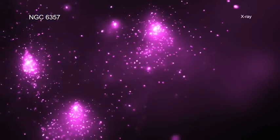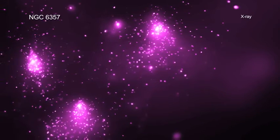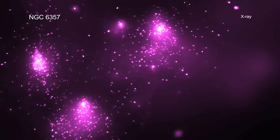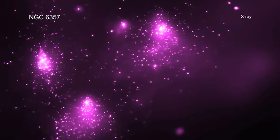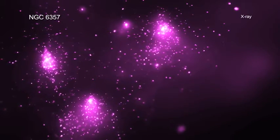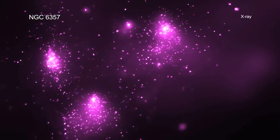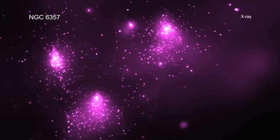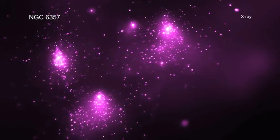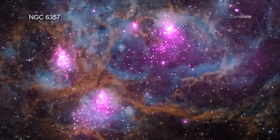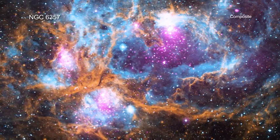Researchers used Chandra to study NGC 6357 and similar objects, because young stars are bright in X-rays. Also, X-rays can penetrate the shrouds of gas and dust surrounding these infant stars, allowing astronomers to see details of star birth that would otherwise be missed.